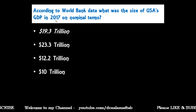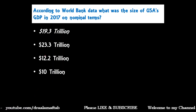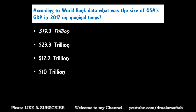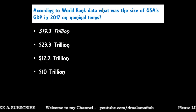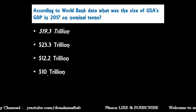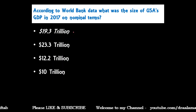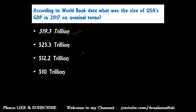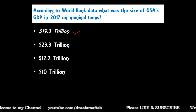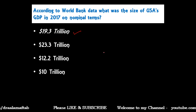Next question: According to World Bank data, what was the size of USA's GDP in 2017 on nominal terms? Options are: 19.3 trillion dollar, 23.3 trillion dollar, or 10.3 trillion dollar. The correct answer is 19.3 trillion dollar. On nominal terms, USA's GDP was the highest at 19.3 trillion dollar.